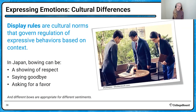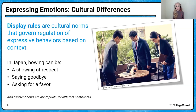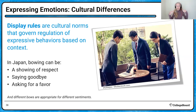What might be different are the display rules — cultural norms that govern what you're supposed to display based on context. In the United States, we typically shake hands when we meet people. We certainly wouldn't typically bow in this culture. But in Japan, bowing can be a show of respect, saying goodbye, or asking for a favor — and each bow is a little different. So while there are cultural similarities in facial expressions, the display rules for other expressions of emotion are probably different between cultures.